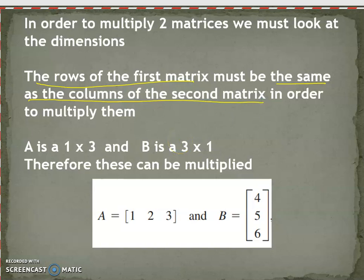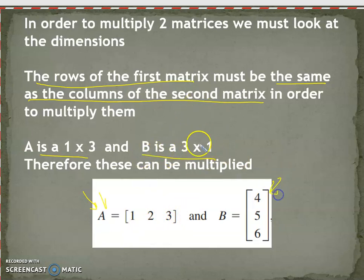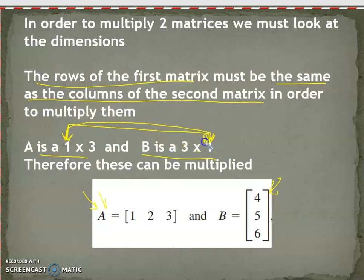The easiest way to do that is to just write both of the dimensions down. So matrix A has one row and three columns, and matrix B has three rows and one column. The rows in the first matrix have to equal the columns in the second matrix. Therefore, we could multiply these two matrices.